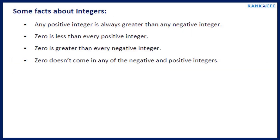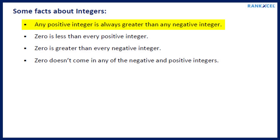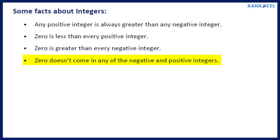Some facts about integers: Any positive integer is always greater than any negative integer. Zero is less than every positive integer. Zero is greater than every negative integer. Zero doesn't come in any of the negative or positive integers.